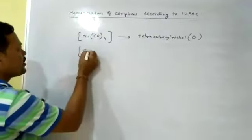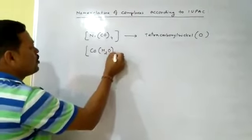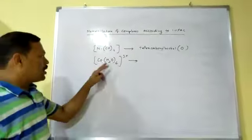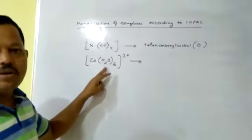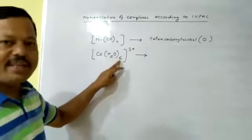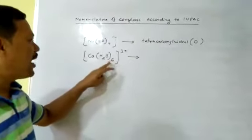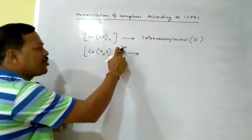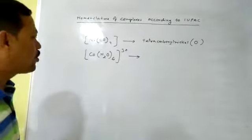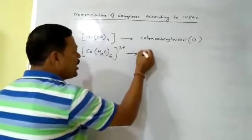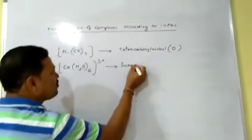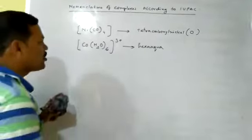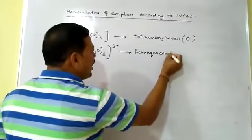Similarly, consider this complex: [Co(H₂O)₆]³⁺ — it contains 3+ charge outside the square bracket. Here the ligand is water. Water is called aqua as a ligand. How many aqua? 6. Six is called hexa. So you write hexaaqua. This is a cationic complex because it contains positive charge outside the square bracket. So you write hexaaquacobalt, since the metal is cobalt.